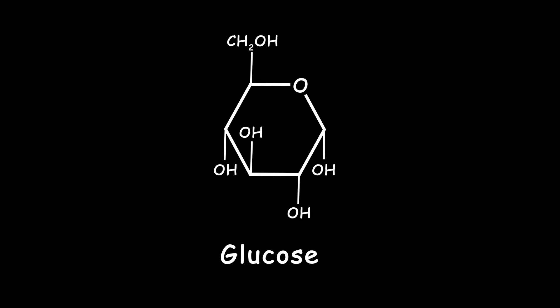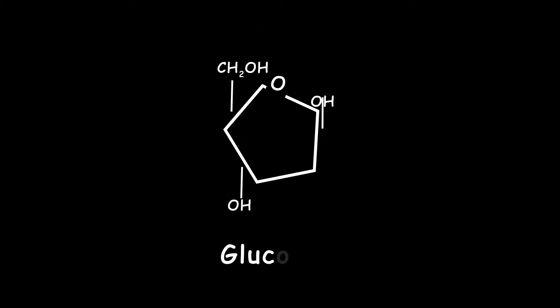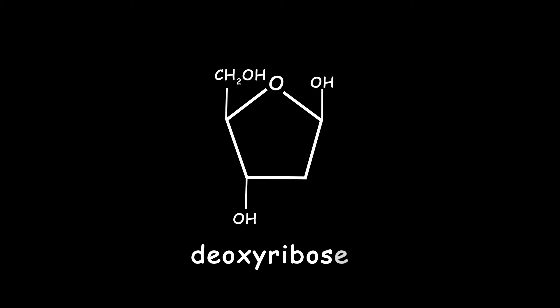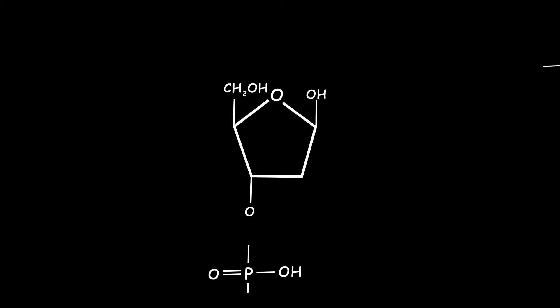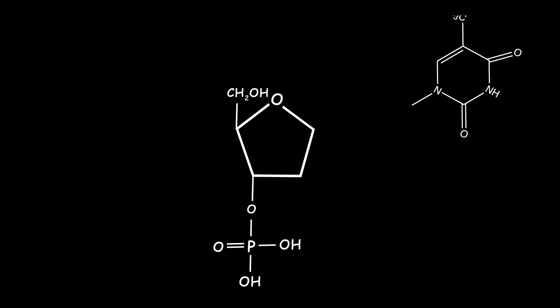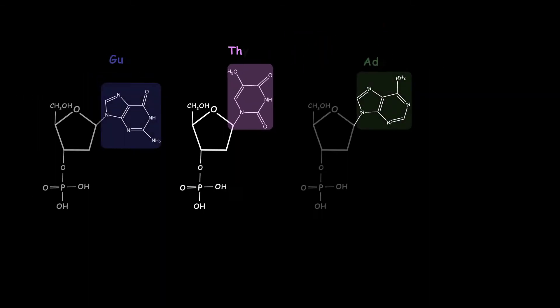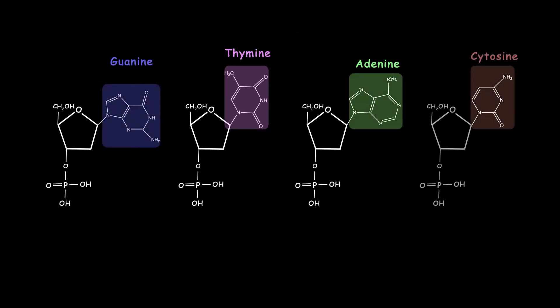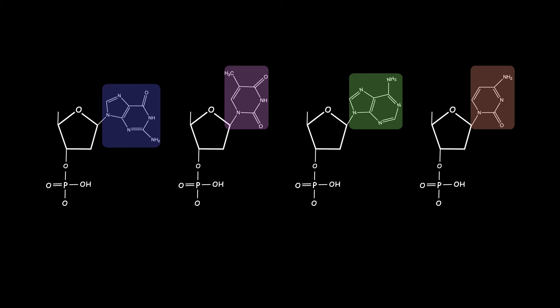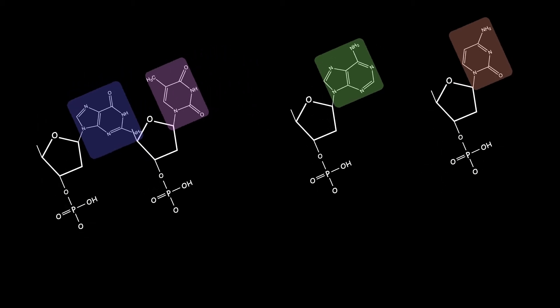Just imagine a simple sugar molecule like glucose. With a little bit of difference in the number of atoms, we can have another sugar molecule called deoxyribose. This sugar combines with two phosphates and a nitrogen base. We call them nitrogen bases because of these nitrogen atoms. There are different types, but four of them would most likely bind to this sugar molecule, making four different units.